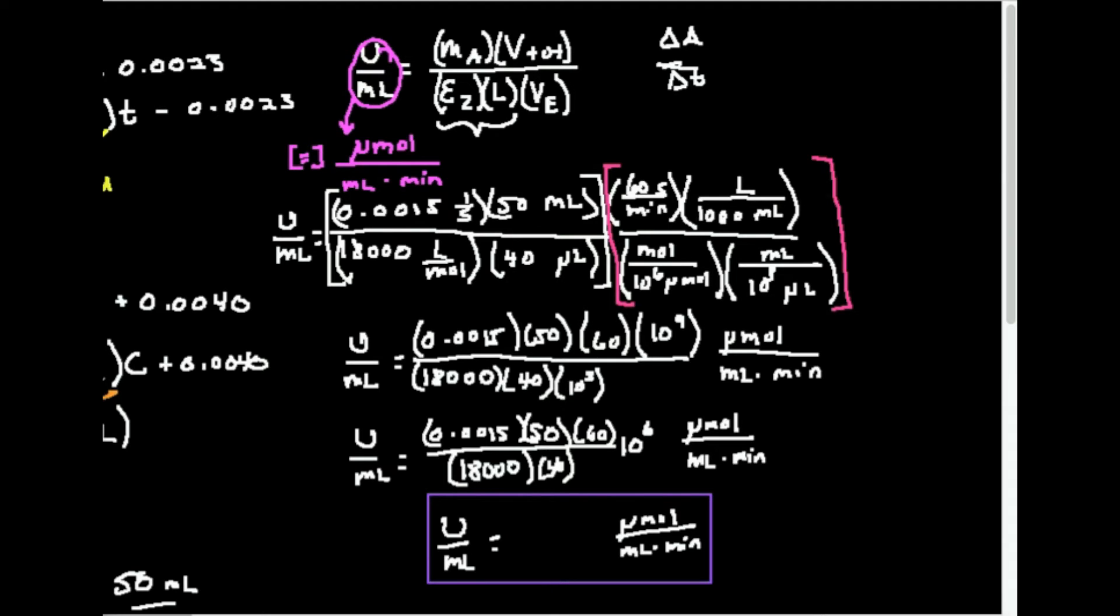Alright. So I'm going to first convert. I'm going to convert this per second to per minute. So I multiply by 60 seconds in a minute and notice seconds cancel. Then remember this quantity right there. I wanted that in liters. So I'm going to convert milliliters to liters. So there's a thousand mils in a liter. So now I have liters here.